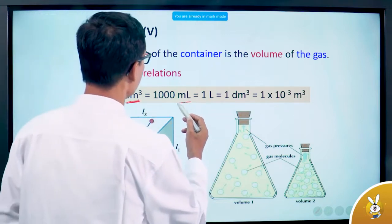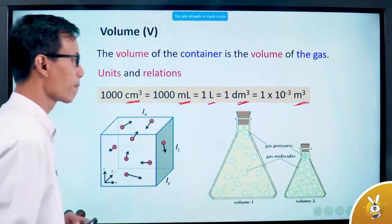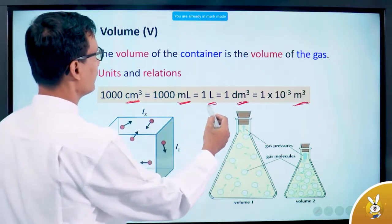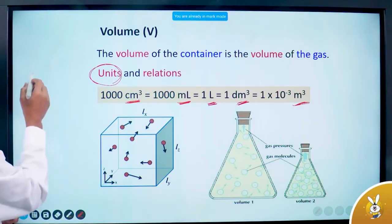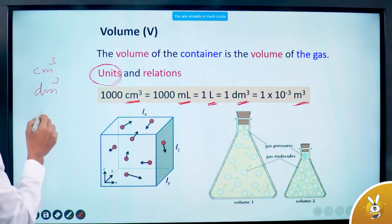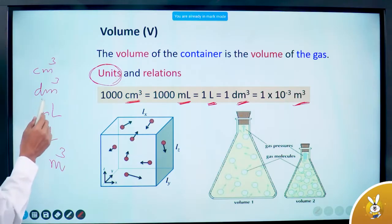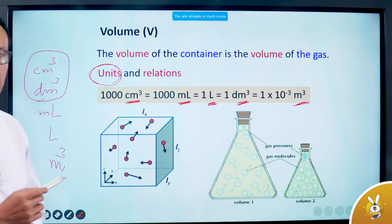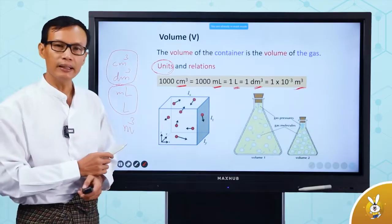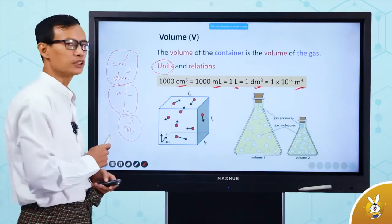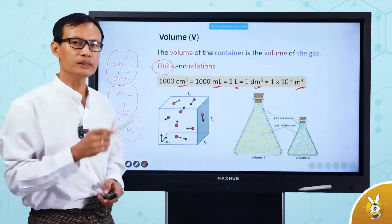CM³ is the same as milliliter. DM³ is the same as milliliter — one liter, one DM³. Other ways: a milliliter and a liter, a milliliter and a liter. Not a quarter meter, square meter — so we are talking about CM³ and DM³.